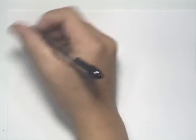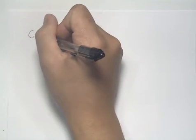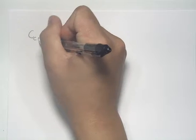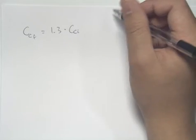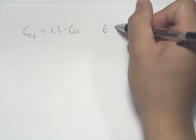So we can write our conditions for what happens. So our final cell concentration is equal to 1.3 times the initial cell concentration, CCI, because it increases by 30%. Our time frame for this growth period is 5 hours.